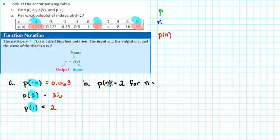As we move on to part b, it says, for what value or values of n does p(n) equal 2? Well this time, instead of being given the input, we are given the output. p(n) is the output, and that number is 2. So we want to locate 2 in the output column, which we have already done, and we want to write down what is the corresponding input. Well the corresponding input is the number 1. So n is equal to 1.